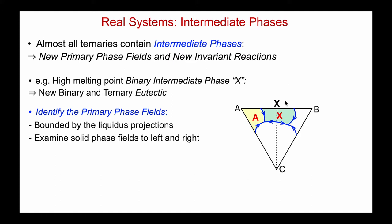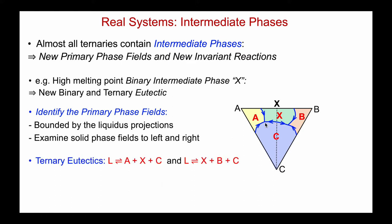For example, here in this corner, this will be primary phase field A. To the right of this we have X, so it's a eutectic between A and X — this must be the primary phase field of X to the right of it. X to the left, primary phase field B to the right. And down in this region, primary phase field of C. Now we can identify both ternary invariant reactions. In this case, we know it's a eutectic — all the arrows coming down in temperature. So for this one, we have liquid in equilibrium with A plus X plus C, and for the other one on the right, it's liquid in equilibrium with X plus B plus C.